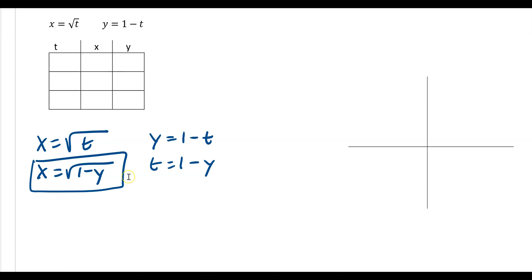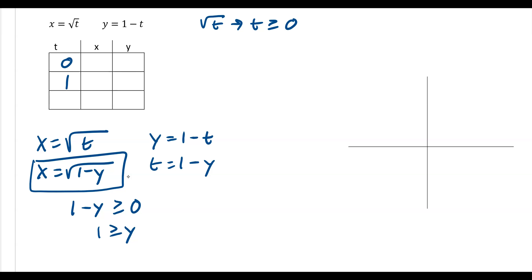That is our square root — x equals square root of 1 minus y. These give us the motion along this track. You can see that 1 minus y must be greater than or equal to 0, so if we move that y over, y has to be less than or equal to 1. Since t must be greater than or equal to 0, plugging 0 into our x gives 0, then 1, then square root of 2. Plugging 0 into our y gives 1, 0, and negative 1. You can see our motion — we are at 0, 1 and then at 1, 0, heading downward along the radical.